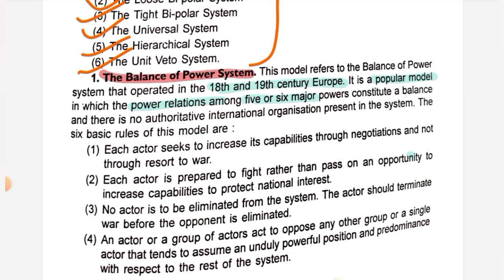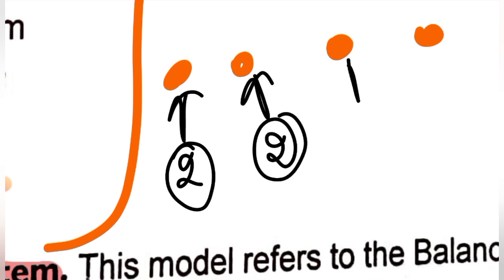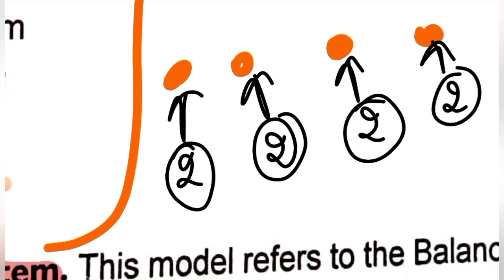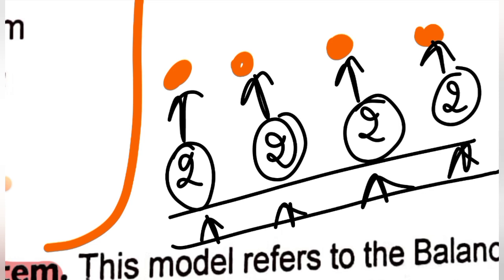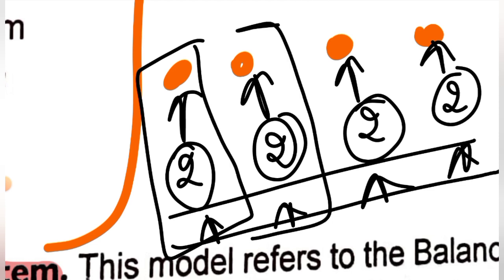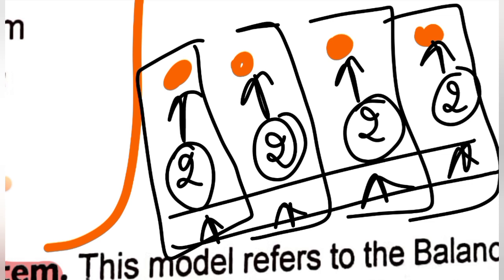The first point is that each actor seeks to increase its capability through negotiation and not through resort to war. Balance of power means all weapons will be increased. If one country becomes powerful, other countries will create a balance of power. So negotiation happens — a country will form alliances with other countries so that it also becomes powerful enough.